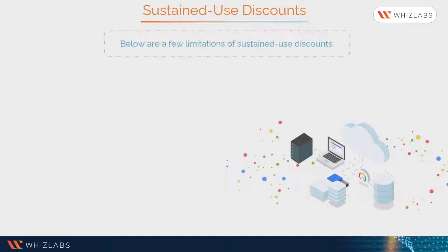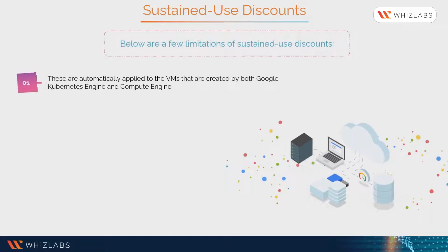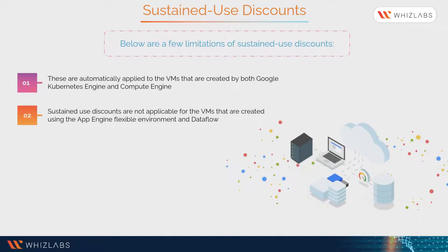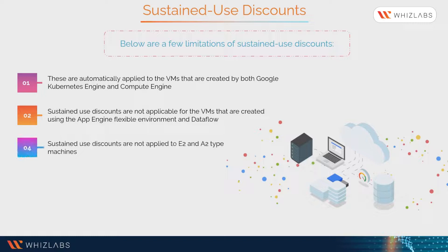Below are a few limitations of sustained use discounts. They are automatically applied to VMs created by both Google Kubernetes Engine and Compute Engine. Sustained use discounts are not applicable for VMs created using the App Engine flexible environment and Dataflow. They are also not applied to E2 and A2 type machines.